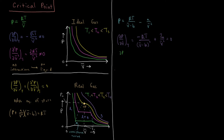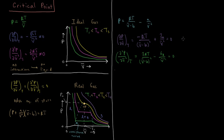For the second derivative, we differentiate the first derivative again — d²P over dV-bar squared at constant T. That gives us 2RT over (V-bar minus B) cubed minus 6A over V-bar to the fourth equals zero. Both of these equations hold at the critical point.